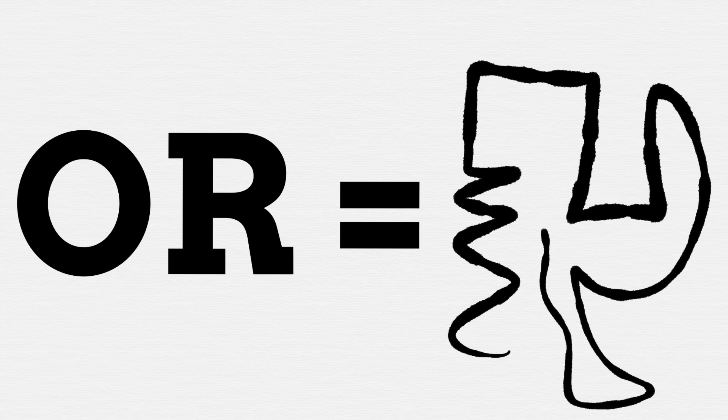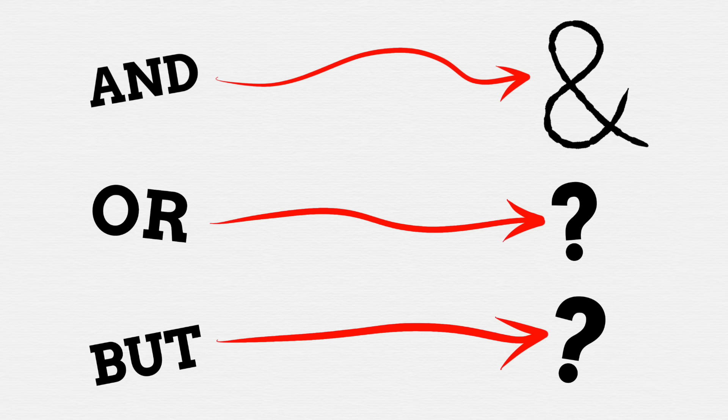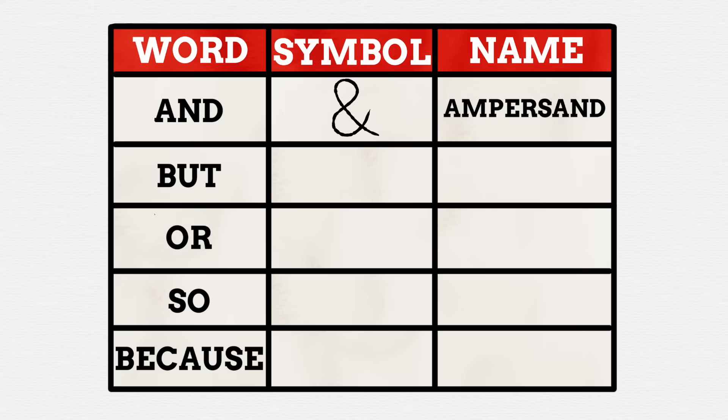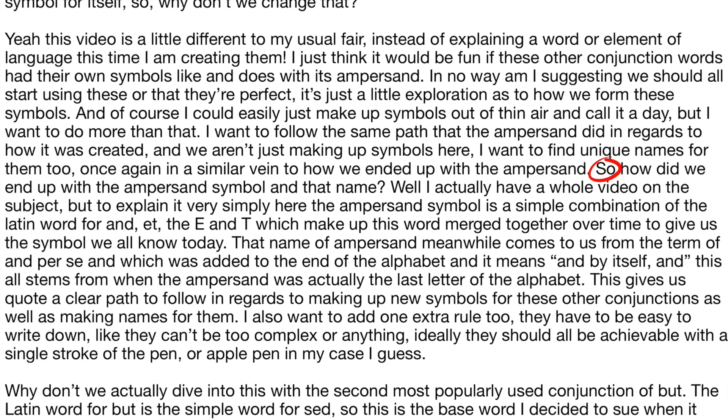I could easily just make up symbols out of thin air and call it a day, but I want to do more than that. I want to follow the same path that the ampersand did in regards to how it was created. And we aren't just making up the symbols here — I want to find unique names for them too, once again in a similar vein to how we ended up with the ampersand. Oh, and look just there — I started a sentence with a conjunction. My teacher is going to kill me.